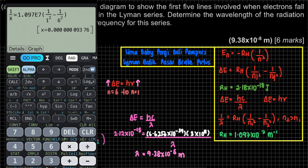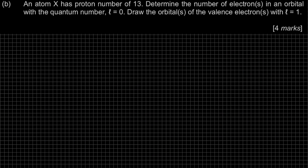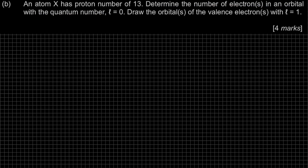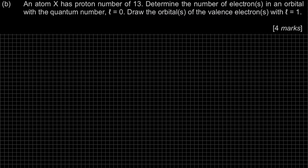That's the solution for Question A. Now Question B: Atom X has a proton number of 13. Determine the number of electrons in an orbital with quantum number L equal to 0, and draw the orbital of the valence electron with L equal to 1. The first step is to write down the electronic configuration. For proton number 13, the configuration is 1s², 2s², 2p⁶, 3s², 3p¹.